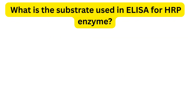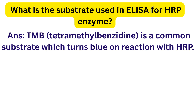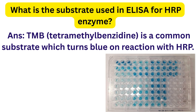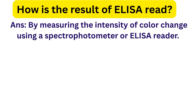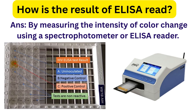The substrate used in ELISA for horseradish peroxidase enzyme is TMB, which stands for tetramethylbenzidine. TMB gives a blue color which later turns yellow after adding a stop solution, and this color change indicates a positive reaction. The result of ELISA is read by measuring the intensity of the color change using a spectrophotometer or ELISA reader.